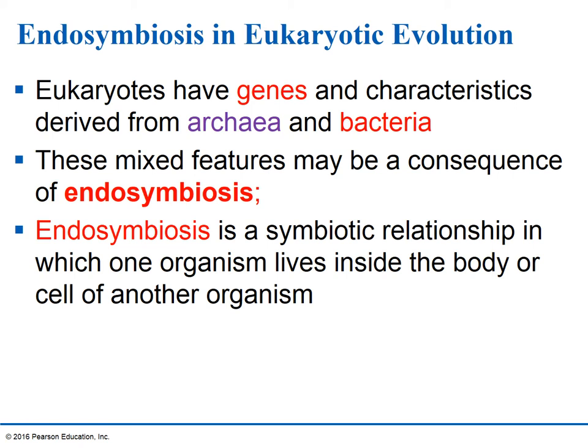A lot of phylogenetic trees show eukaryotes as more closely associated to archaea, but horizontal gene transfer — the shuffling of genes back and forth between species — probably played a major role in the evolutionary history of all living organisms. These mixed features might be a consequence of endosymbiosis. Symbiosis means the living together of two or more organisms. That symbiosis can be mutually beneficial, or it can be commensal (plus/zero), or parasitic (plus/negative).